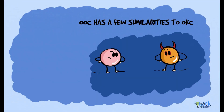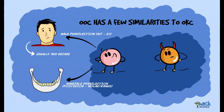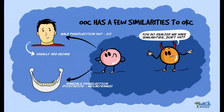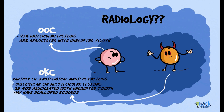Ortho-keratinized odontogenic cysts have a slight male predilection, mostly affect individuals in their third decade, and predominantly affect the mandibular posterior area — similar to odontogenic keratocysts. Ortho-keratinized odontogenic cysts are predominantly unilocular lesions, with 68% of these cysts associated with unerupted teeth in a dentigerous cyst-like fashion.